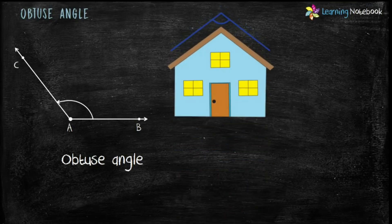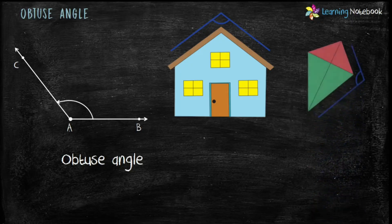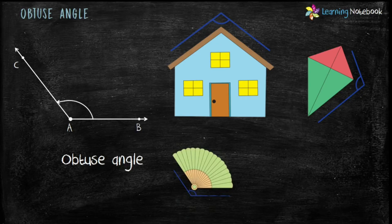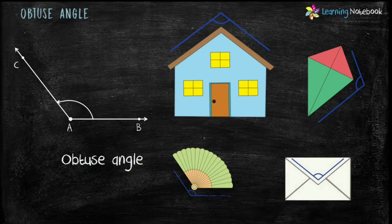Let's see some real life examples of obtuse angle. First is a house roof — it makes an obtuse angle. Second is a kite — edges of a kite make an obtuse angle. Third is a Japanese fan — when we open such a fan it makes an obtuse angle. Fourth is an envelope — the flap of an envelope makes an obtuse angle.